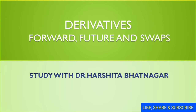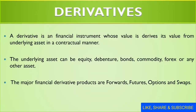Derivative is a financial instrument whose value is derived from an underlying asset. The underlying asset can be equity, debentures, bonds, commodities, forex, or any other asset. When two parties make a contract with each other, that contract is called a derivative, and the underlying asset can be equity, bonds, debentures, gold, forex — anything.